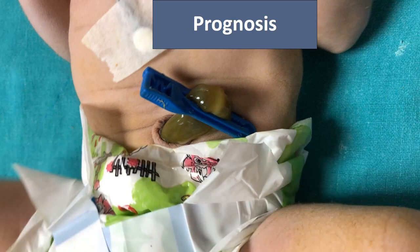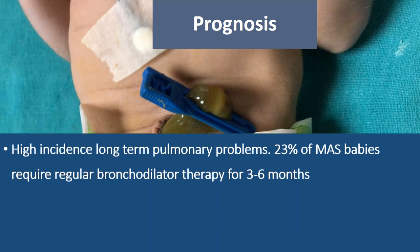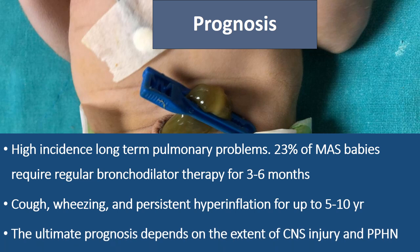What is the prognosis of meconium aspiration syndrome? There is a high incidence of long-term pulmonary problems. 23 percent of MAS babies require regular bronchodilator therapy for three to six months. Cough, wheezing, and persistent hyperinflation could be present up to five to ten years of age. The ultimate prognosis depends on the extent of CNS injury from birth asphyxia due to hypoxia, and also on the severity of persistent pulmonary hypertension.